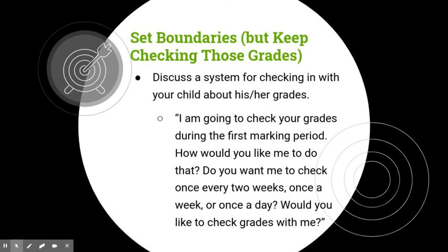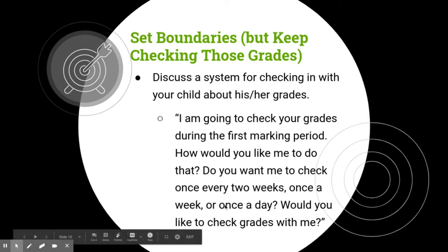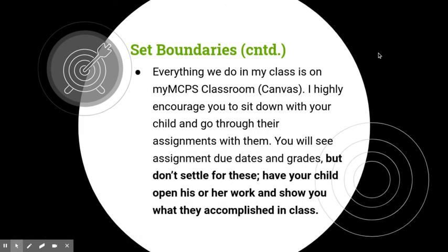Setting boundaries — but keep checking those grades. Discuss some kind of system for checking in with your child about his or her grades. If you make the child part of this decision-making process, it usually goes a lot smoother and you don't have quite as much resistance. Everything we do in my class will be on my MCPS classroom or Canvas. I highly encourage you to sit down with your child and go through the assignments with them. Have your child actually open his or her work and show you what they've accomplished in class.